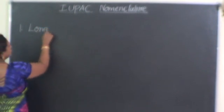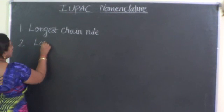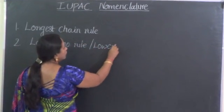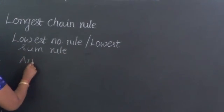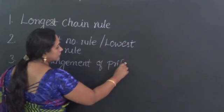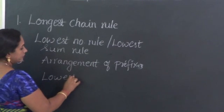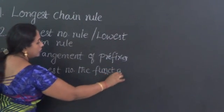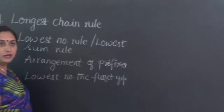The first rule is the longest chain rule. The second rule is the lowest number rule, or lowest sum rule. The third rule is the arrangement of prefixes. The fourth rule is the lowest number to the functional group. And the fifth rule tells us the alphabetical arrangement of the functional group. Now let us learn about all these rules one by one in detail.